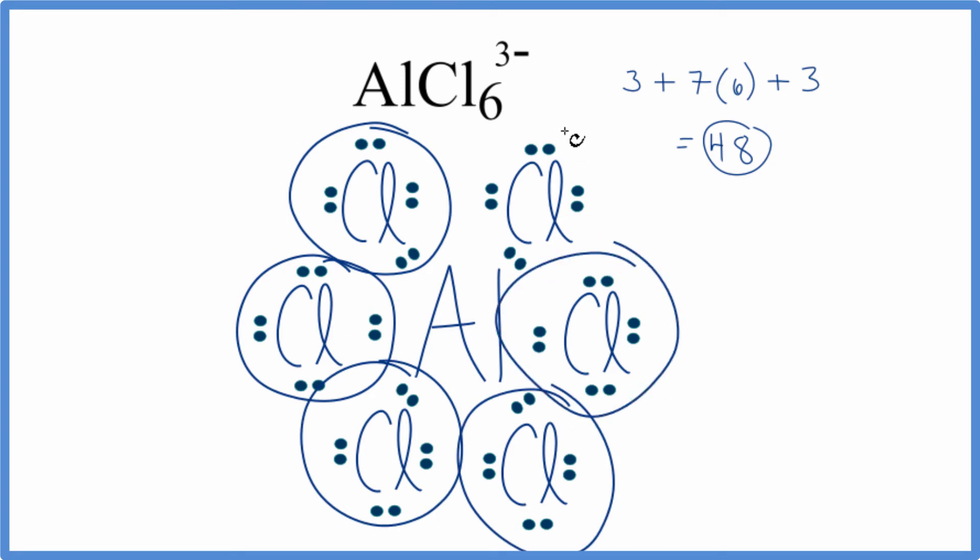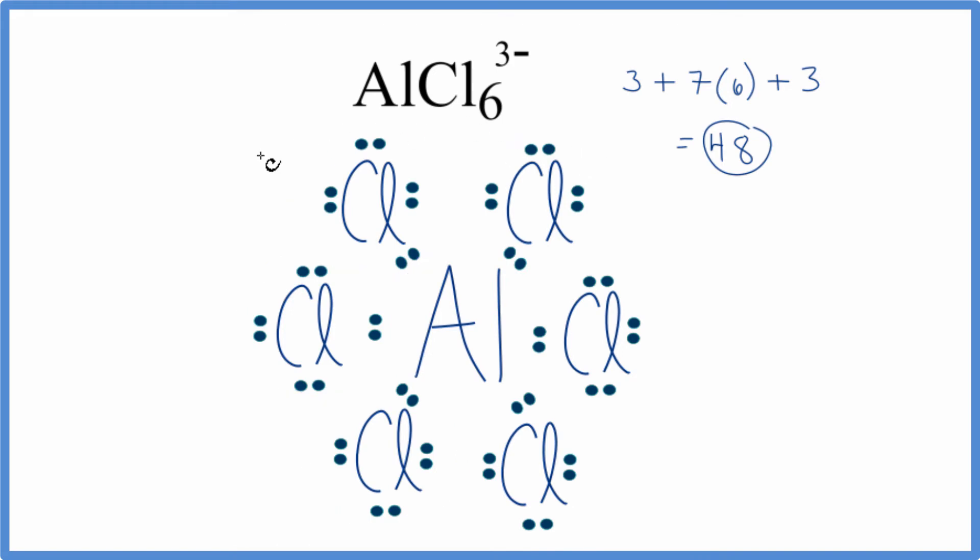We said the aluminum in the center, that doesn't have to have just eight, it can have more than eight. So this is the Lewis structure for AlCl6 3-. We should put brackets around it, since it's an ion, and then put a 3- charge outside of the brackets.